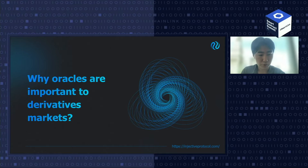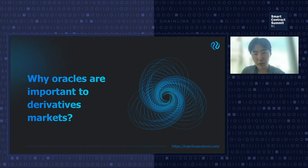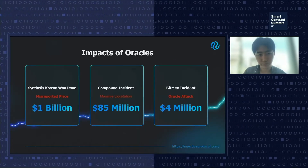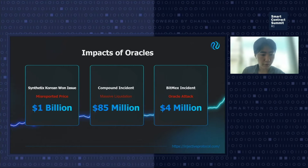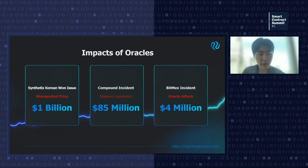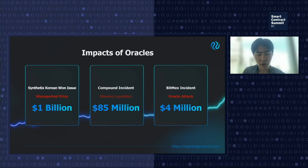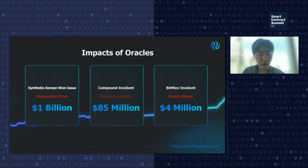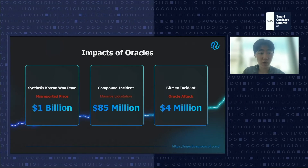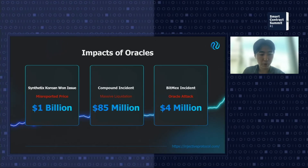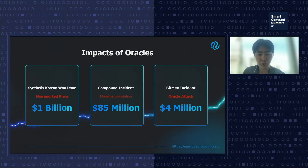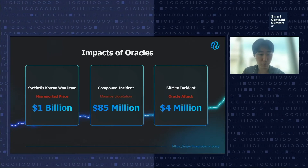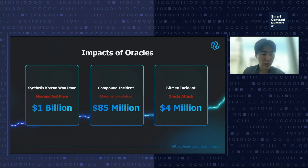During the course of Solstice and later on the Equinox testnet, we noticed a lot of delays and micro factors that could contribute to the overall security and scalability of derivative markets. Oracle failure, especially for any type of DeFi project — lending protocols, derivatives — is extremely detrimental. We've seen it in traditional finance and centralized crypto exchanges and in DeFi. Synthetix had a Korean won issue that created a billion dollars in potential profit. Compound had an incident that caused a massive liquidation of $85 million. BitMEX has had multiple manipulable price feeds and oracle issues that caused $4 million in losses historically.